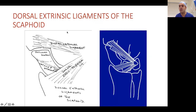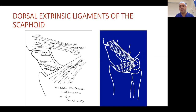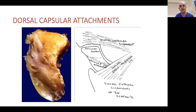In terms of extrinsic dorsal ligaments, these are thickenings of the capsule, so you don't see them separate from the capsule. They are centered over the triquetrum. There's a dorsal radio-triquetral ligament coming from radius to triquetrum, and another ligament going from all four distal carpal bones that confluences and attaches to the triquetrum. These pictures were kindly lent by Mr. Compson, under whom I did my fellowship at King's College.